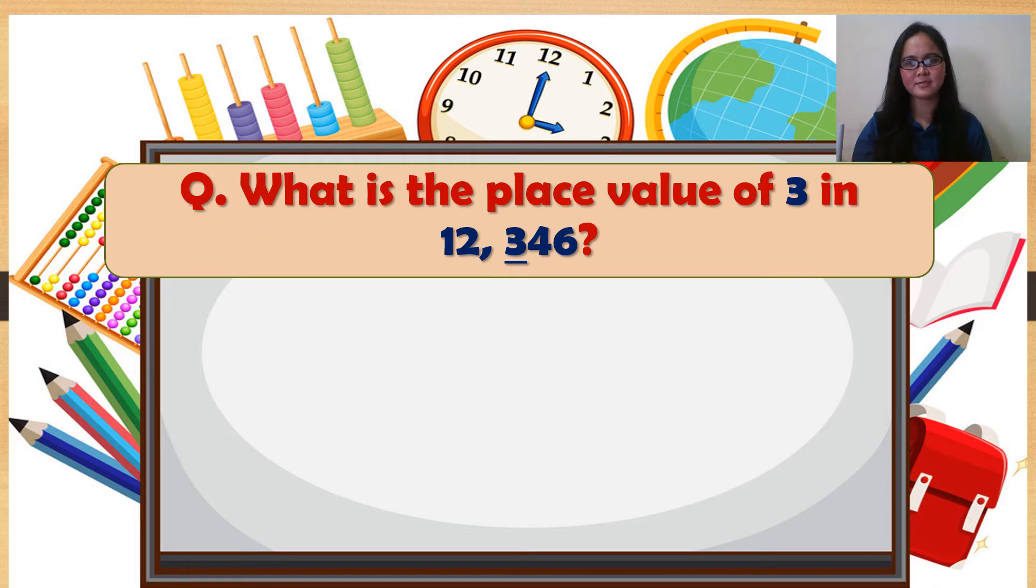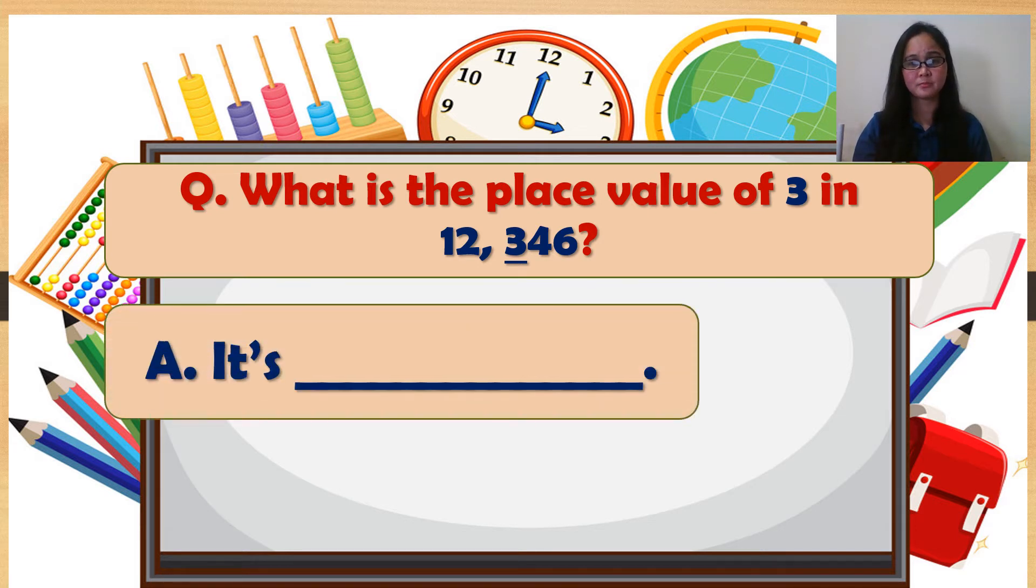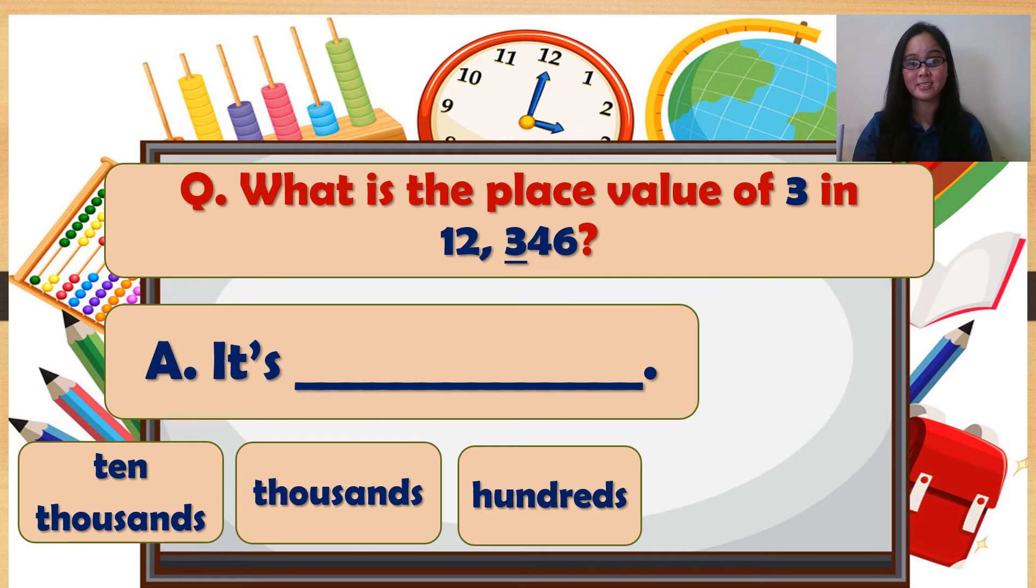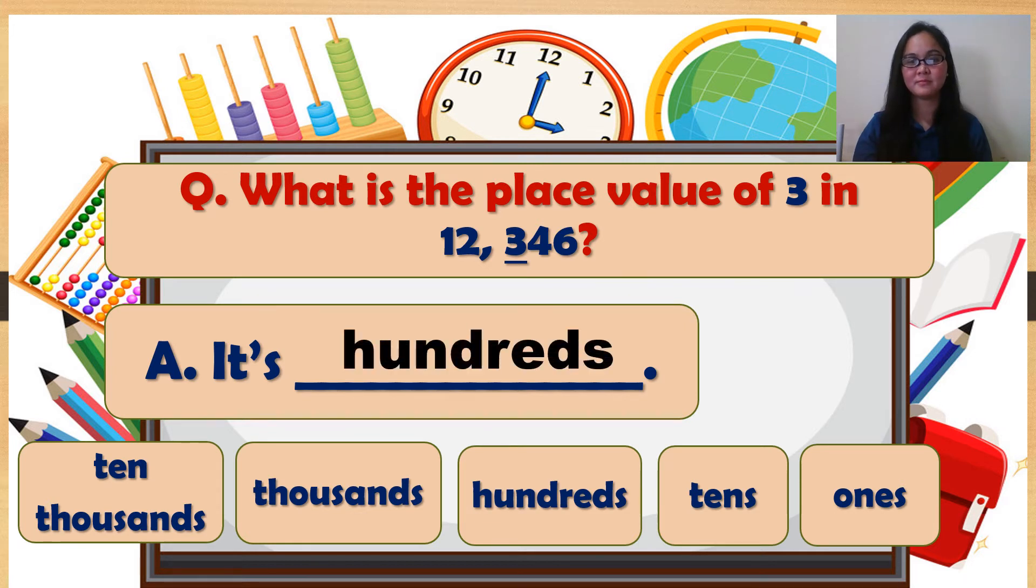Next, what is the place value of 3 in 12,346? It's blank. Is it ten thousands, thousands, hundreds, tens, ones? It's hundreds. Very good.